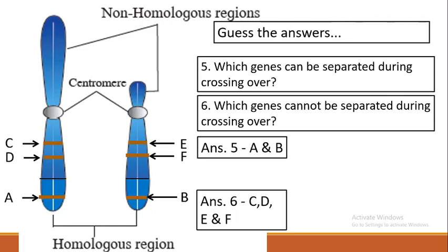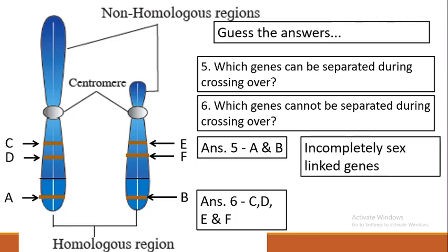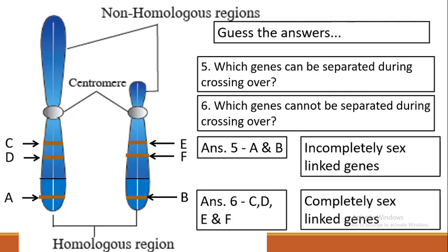We are looking at this on the basis of sex chromosomes — one X and one Y. Therefore, genes A and B are called incompletely sex-linked genes because they are present on the sex chromosome and incompletely linked, meaning they do not have a chance of inheriting together perfectly. Genes C, D, E, and F are called completely sex-linked genes because they have a higher chance of inheriting together, since they are located on the non-homologous region where crossing over does not occur.